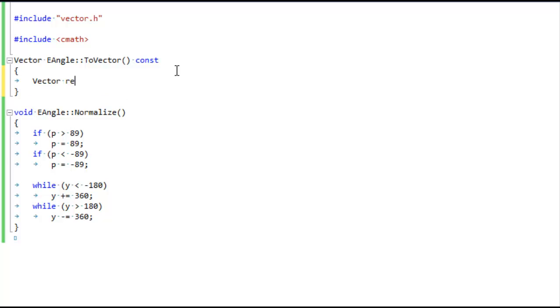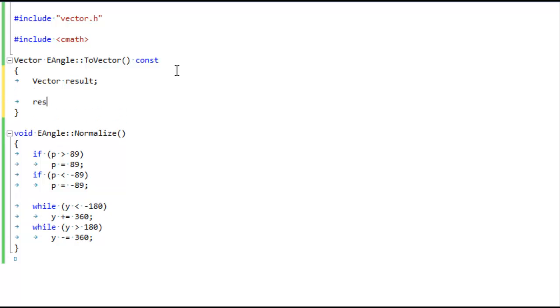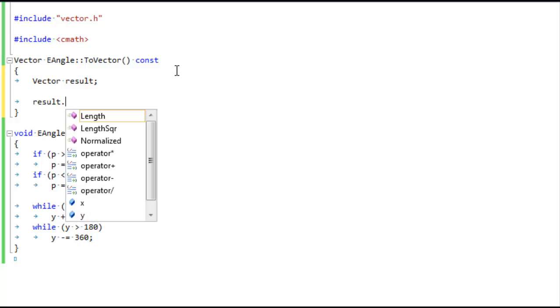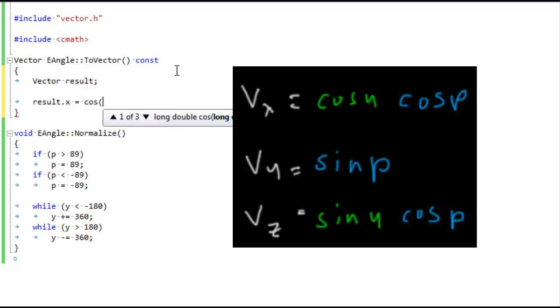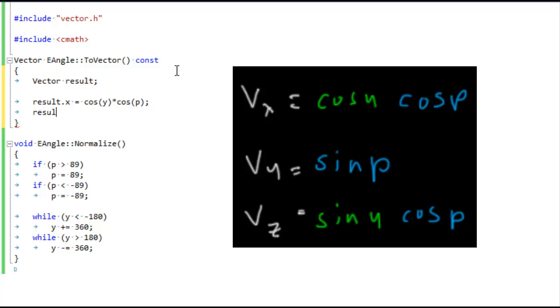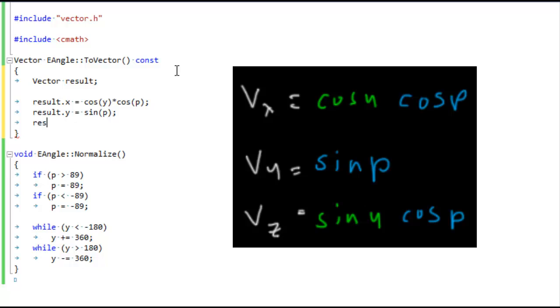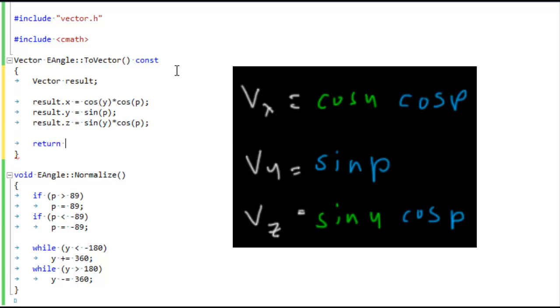We're going to make a result vector, and this is what we're going to return at the end of the function. So result dot x, what was that? Here's our formula on the right: cosine of the yaw times cosine of the pitch. And the result dot y is going to be just sine of the pitch. And the result dot z is sine of the yaw times cosine of the pitch. That's it. Return our results.